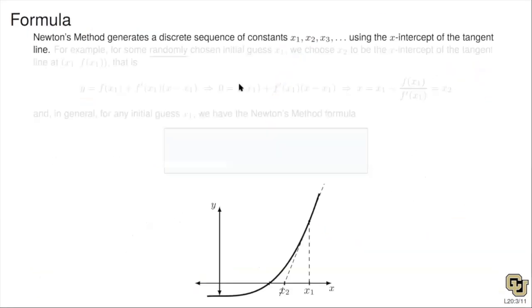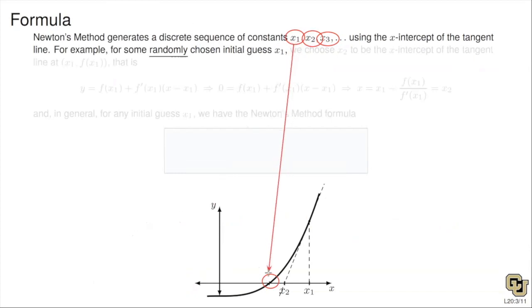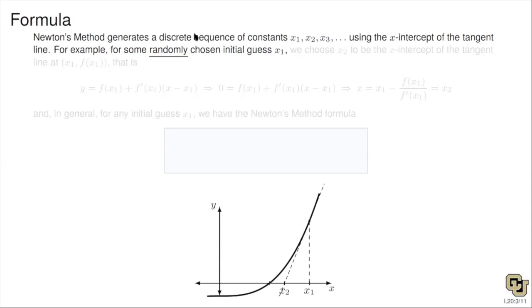There's a subtle difference between continuity and being discrete — countable versus uncountable. At the end of the day, Newton's method is generating a countable or discrete sequence of numbers, and hopefully these numbers are approaching the X-intercept of our function.